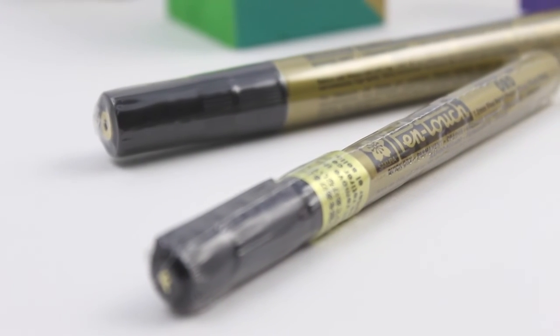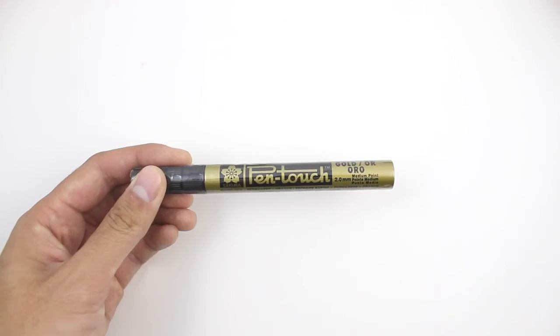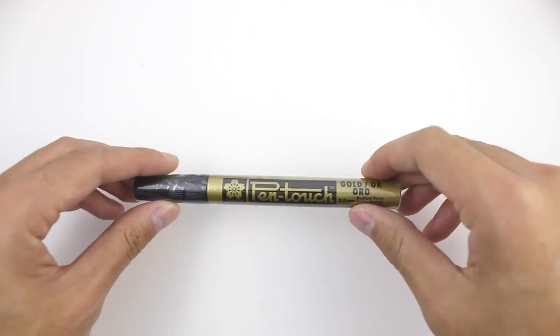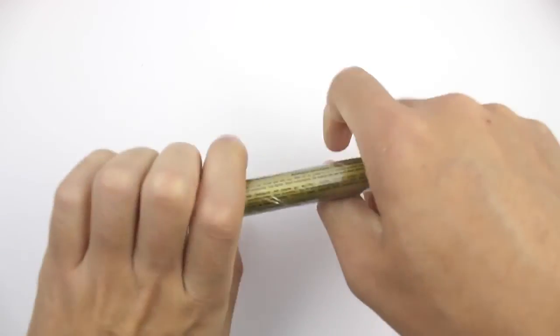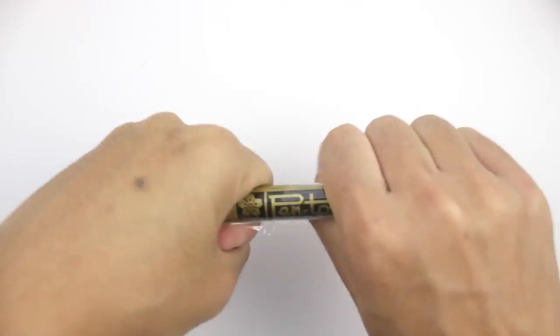Last but not least, people sometimes struggle with removing the plastic shrink wrap from a new pen. The quickest solution is to tightly hold the marker from both ends and twist it in an opposite direction until the plastic comes apart.